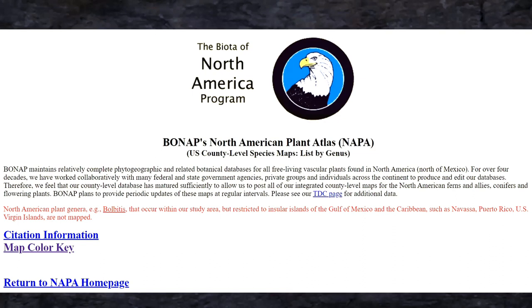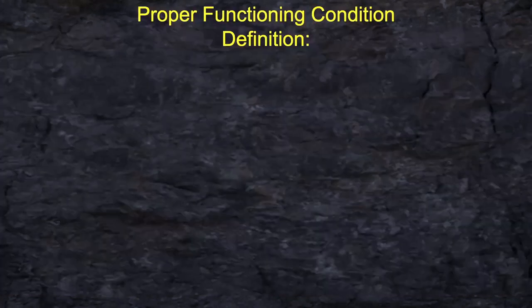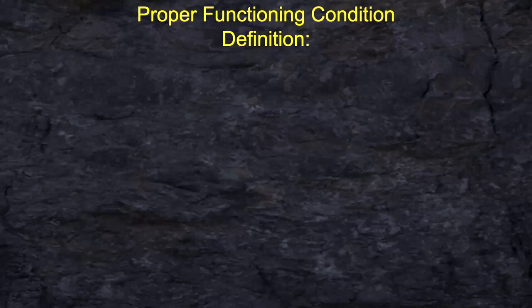The distribution maps come from the Biota of North America Program — BONAP. If you go online and look where it says 'U.S. County Level Species Maps,' that is where I'm getting the county maps. You can also go online and read about proper functioning condition of a riparian area.